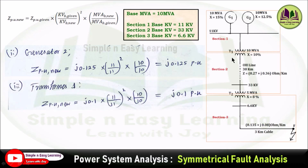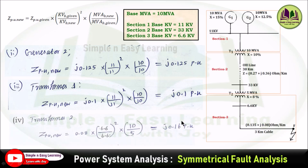For transformer T1, x = 10%, connected at 11 kV; base kV is also 11 kV (section 1), MVA base = 10, MVA given = 10, so the per-unit reactance remains j0.10 per unit.